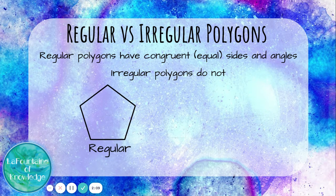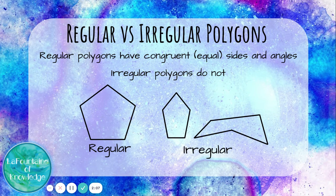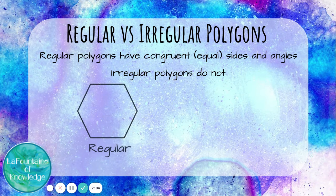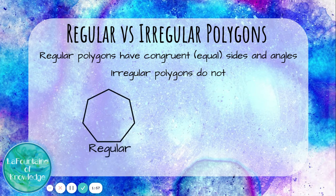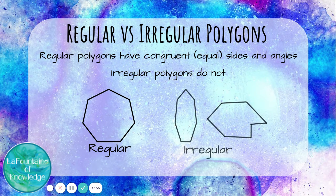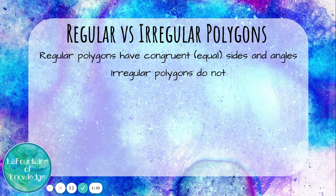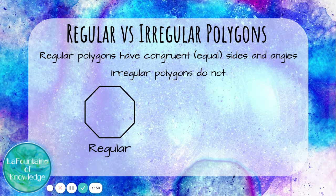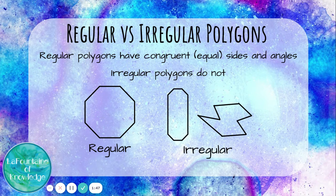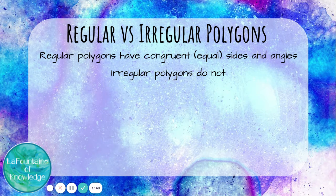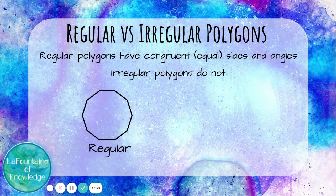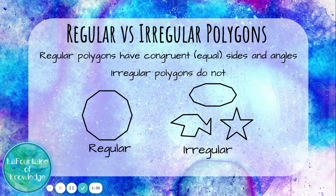A regular pentagon and irregular pentagons. A regular hexagon and irregular hexagons. A regular heptagon and irregular heptagons. A regular octagon and irregular octagons. A regular nonagon and irregular nonagon. And finally, a regular decagon vs. irregular decagons.